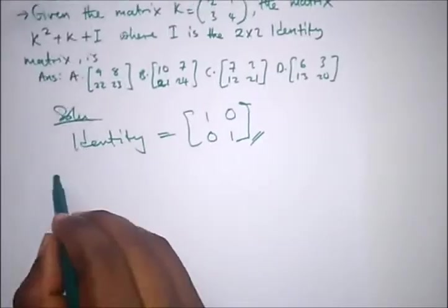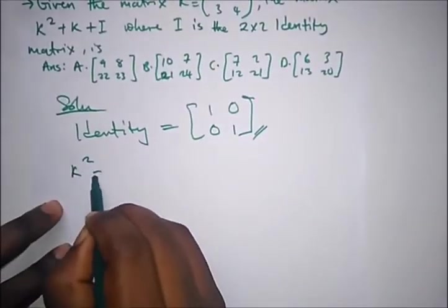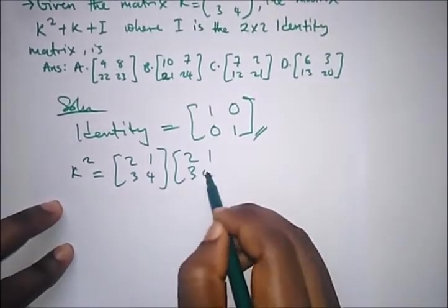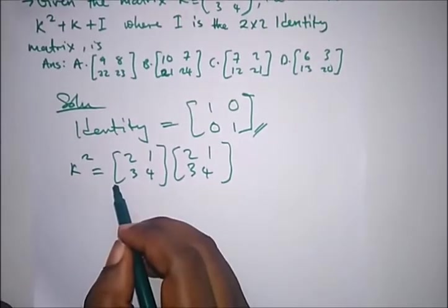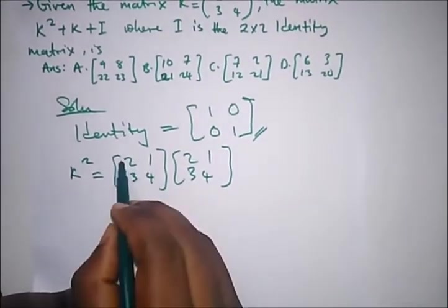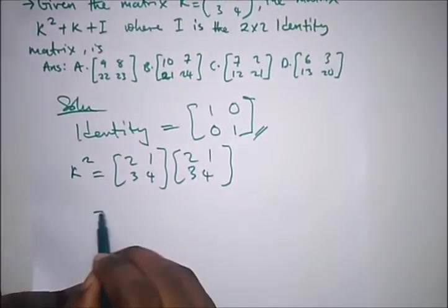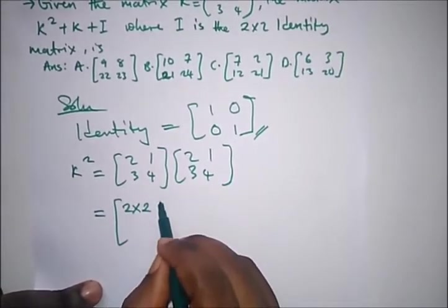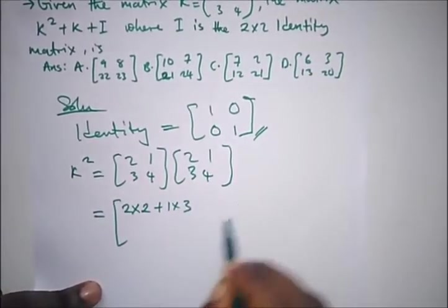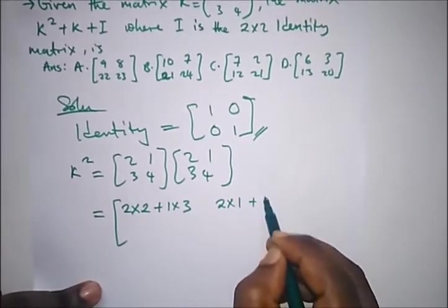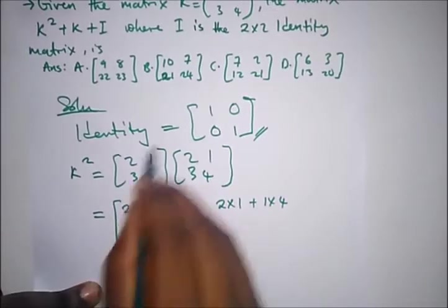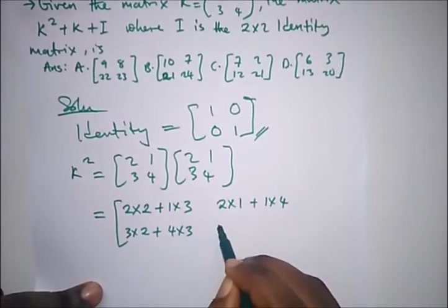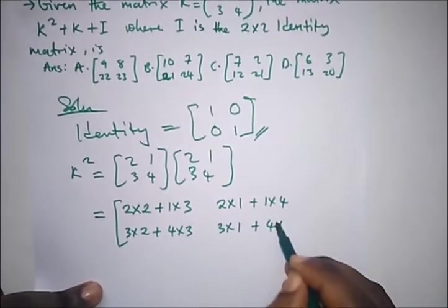So k squared is [2, 1; 3, 4] multiplying [2, 1; 3, 4]. Remembering matrix multiplication, we'll multiply this row by these two columns. So we have 2 times 2 plus 1 times 3, and 2 times 1 plus 1 times 4. Multiplying the second row by the two columns, we have 3 times 2 plus 4 times 3, and 3 times 1 plus 4 times 4.